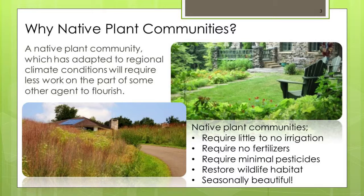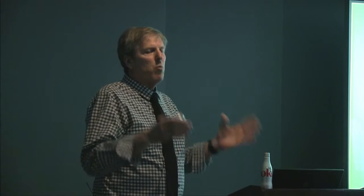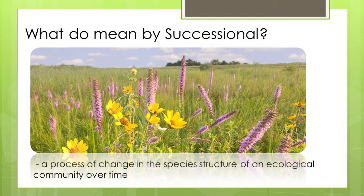What do we mean by successional? It's a process of change — change in the species structure of an ecological community over time. I call these native plant communities; they want to be with their friends. Diversity, high species counts: 50, 75 and more. Over time they are not going to stay the same. You're not going to weed a prairie so that it always looks the same year after year. We call it succession — it is going to change with time. These species have evolved that way and it's in their genetics.